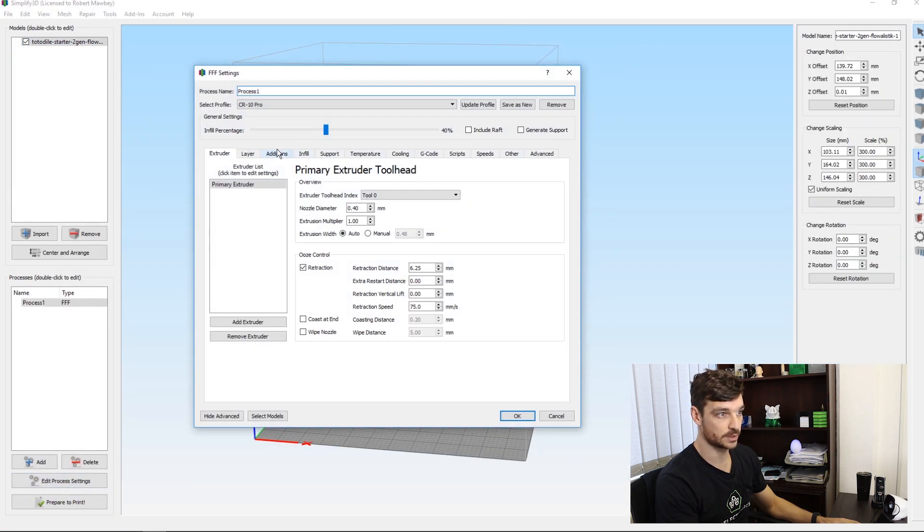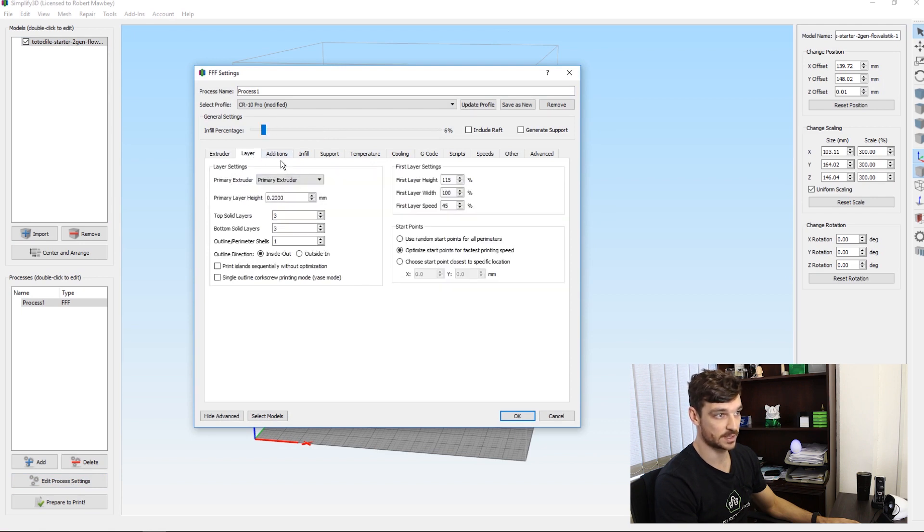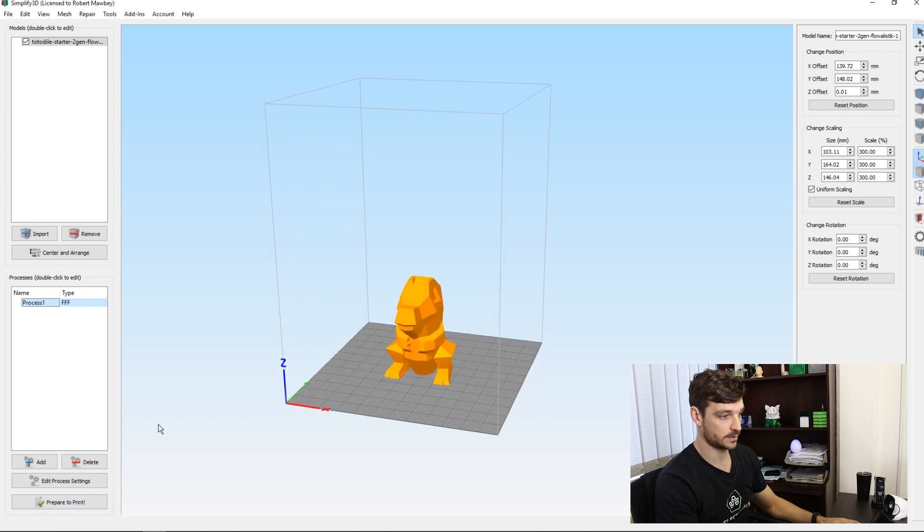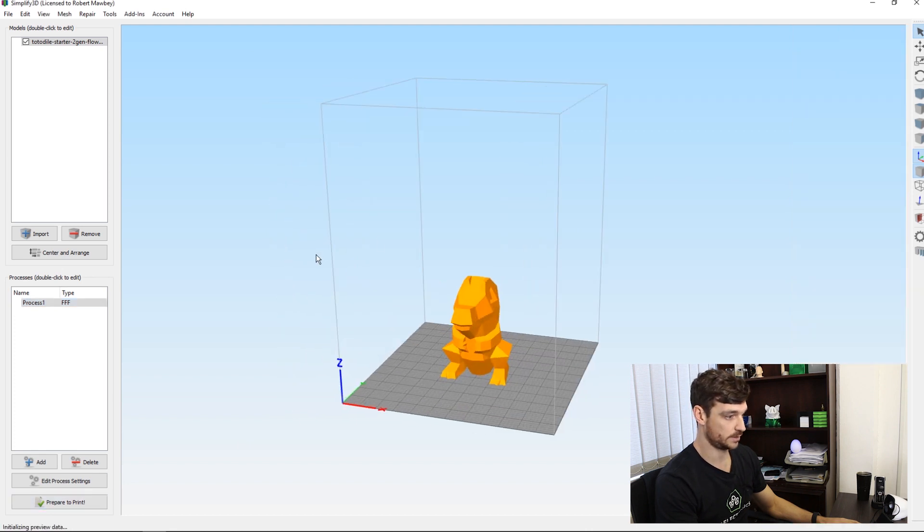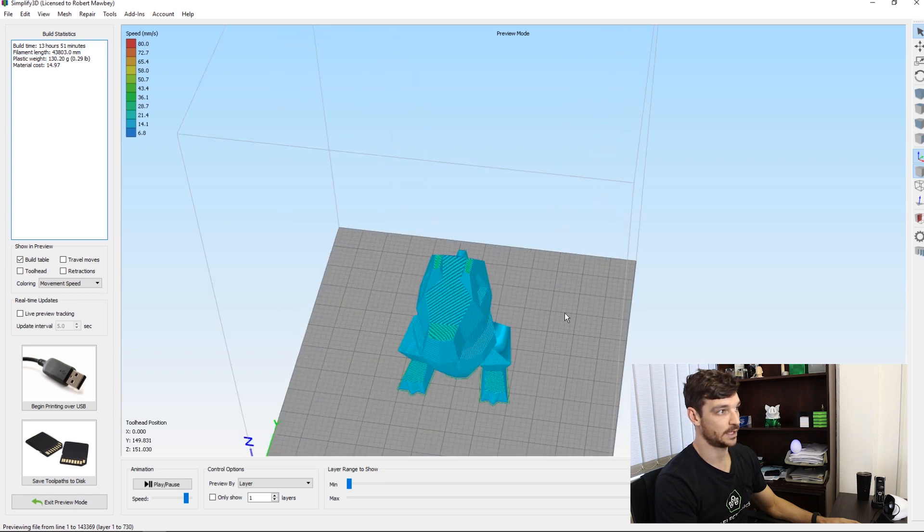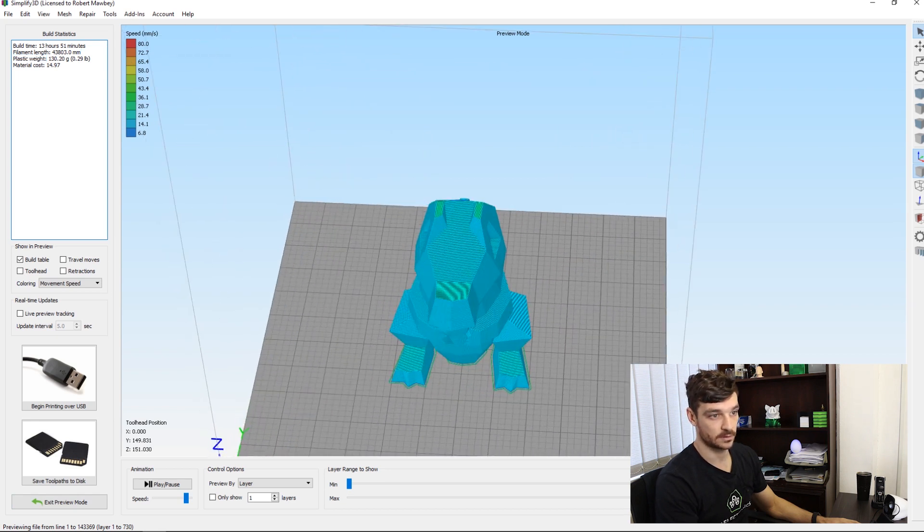We're going to now do our more economical version. I'm going to go for just 6% infill and we're going to move to three outline perimeter shells. I'm going to do four top solid layers. Let's see how much filament this is going to use. Only 130 grams. Much better.